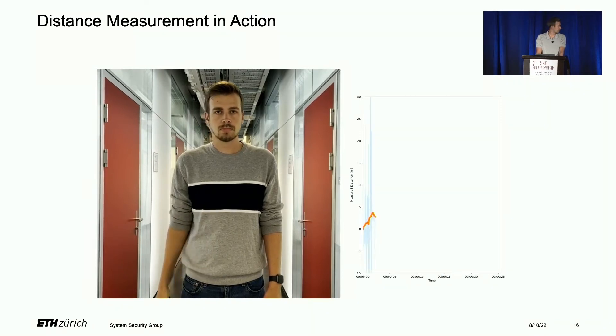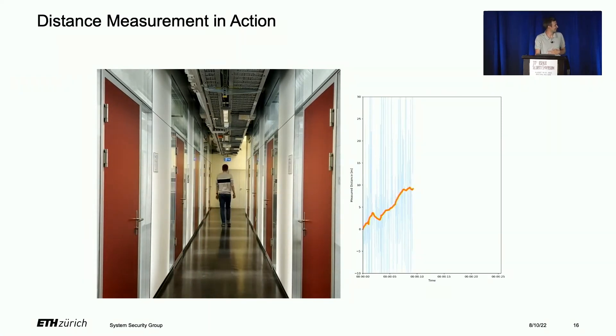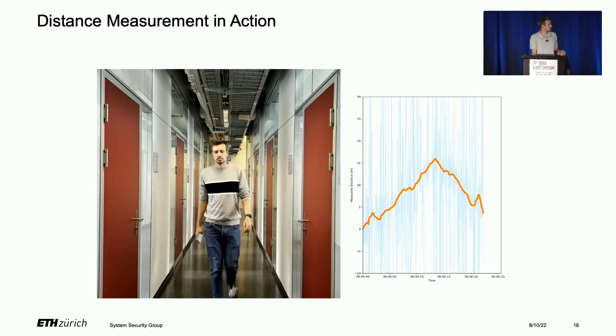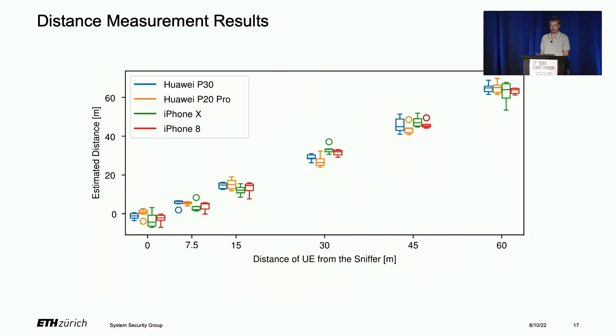We have a distance measurement demo. The camera, base station, and sniffer are at one location, and I'm walking away in this corridor, which is exactly 15 meters long. I go there and back, and you can see in the graph I went from zero to 15 meters. Individual measurements are the blue lines, for every single uplink data, and the orange line is a smoothed average. For our distance measurement evaluations, we used four different phones at six different distances ranging from zero to 60 meters, and found the error was roughly six meters maximum in 90% of cases. Usually it was even better.